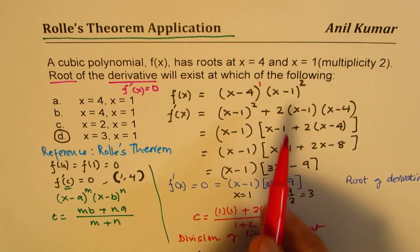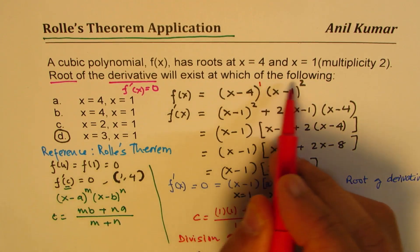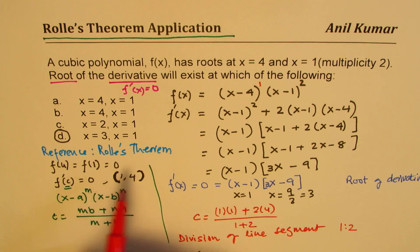In a given ratio, which is 1 is to 2. So in the ratio, in this case, 1 is to 2, which are the powers. In this case, it will be this particular ratio, m is to n.